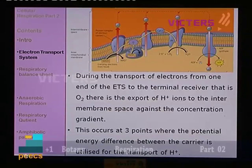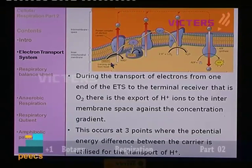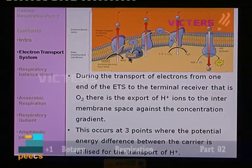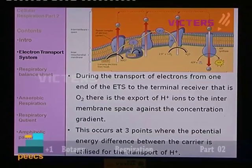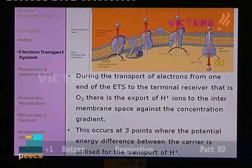Hydrogen ions are pumped with the use of energy. In the first case, NADH to ubiquinone results in the pumping of H+ ions. FADH releases two hydrogen ions, but in the case of NADH there are three hydrogen ion pumpings. This occurs at three points where the potential energy difference between the carriers is utilized for the transport of H+ ions — and it happens against the concentration gradient.